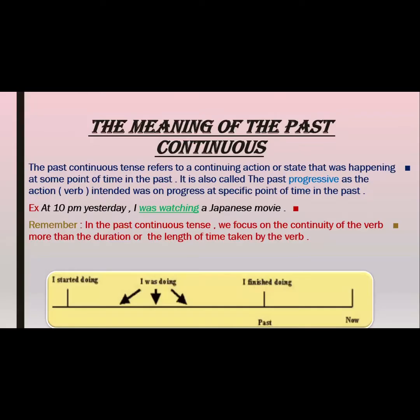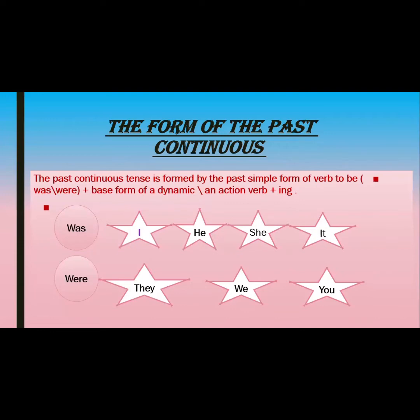I told you about the meaning of the past continuous — it has several meanings. One of them is to show that an action was in progress at a specific point of time in the past. I gave you the formation: was or were plus a dynamic verb base form plus -ing. Was is used with the first and third person singular — I, he, she, it — and were with they, we, and you.